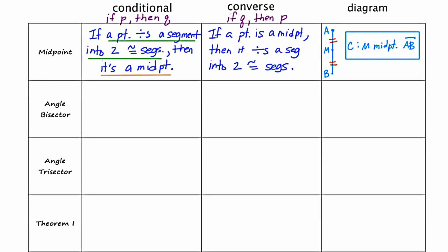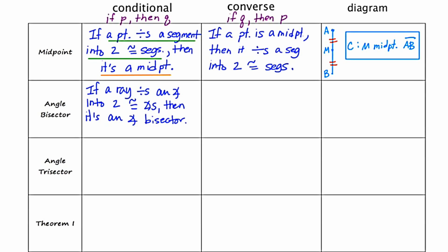Moving on to the next definition, which is for angle bisector. That definition is: if a ray divides an angle into two congruent angles, then it is an angle bisector. I'll identify the hypothesis in green and the conclusion in orange, then interchange them to formulate the converse: if a ray is an angle bisector, then it divides an angle into two congruent angles.